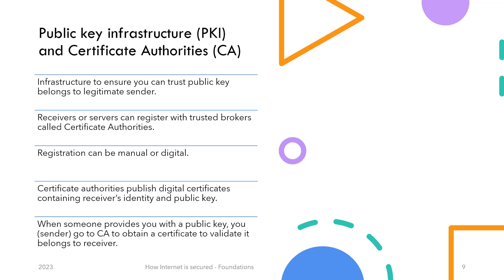We mentioned that you receive public keys over the internet and must trust they actually belong to the other party. If an attacker can substitute the receiver's public key with their own, the sender would be tricked into encoding messages thinking they're communicating securely, while the attacker decodes everything using their own private key. This is a nightmare scenario. To ensure you can reliably receive the correct public key, there is what's known as a Public Key Infrastructure, or PKI, and something called certificate authorities.